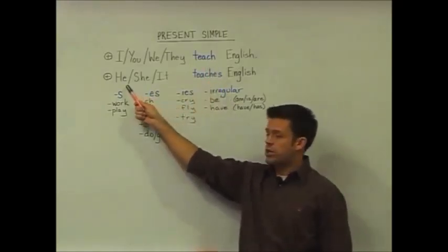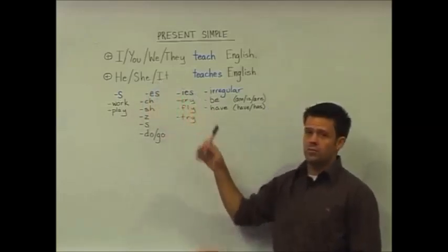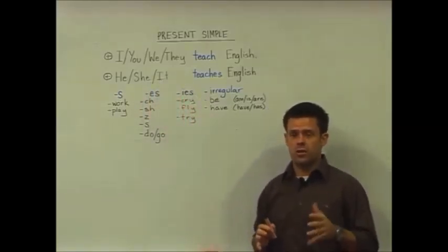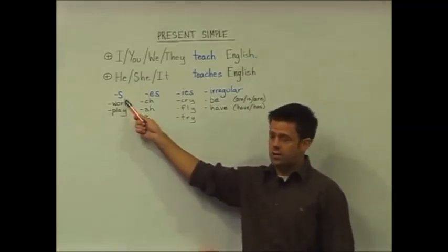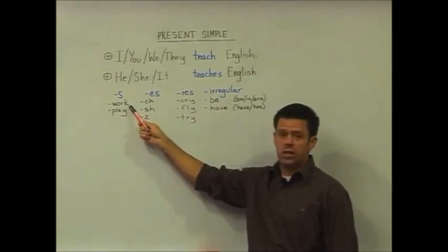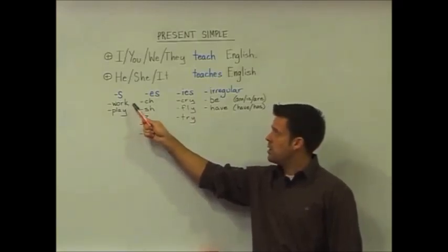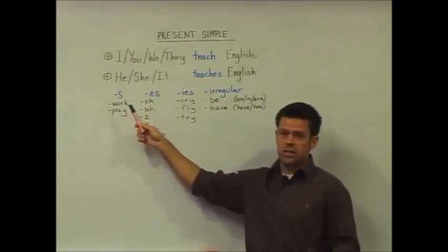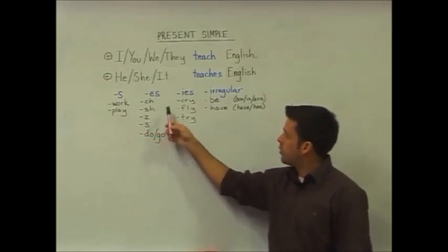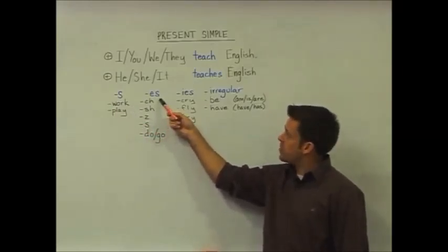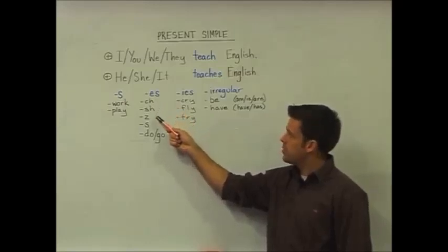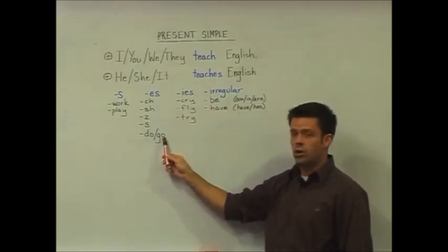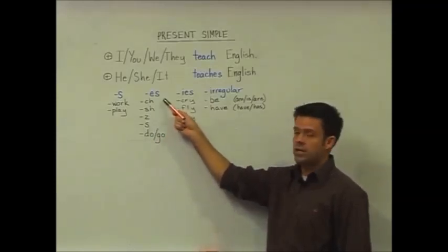However, with subjects he, she, and it, we have some patterns for verb conjugations that we need to have a look at. First, and most common, we add simply an s for verbs like work, play. This is what we typically see within our language. However, when we have verbs with spelling patterns such as ending in ch, sh, z, s, and our shorter verbs do and go, we have to add es.